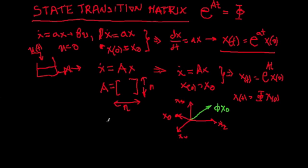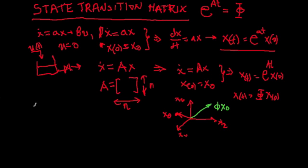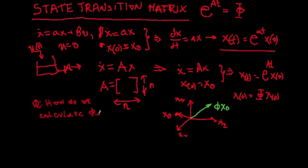The question is now: how do we calculate the state transition matrix, or how do we find the matrix exponential phi = e^(At)? We understand already that e^(At) is a matrix, because phi is a matrix. If the state vector is three-dimensional, phi will be three-by-three.